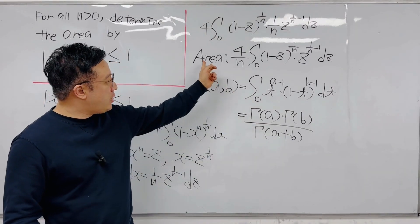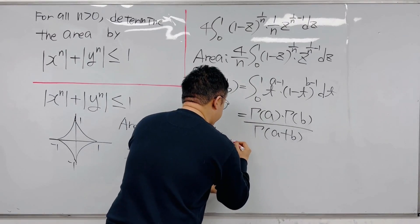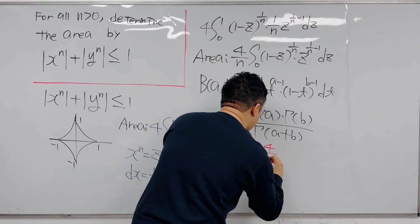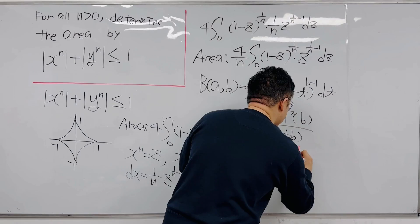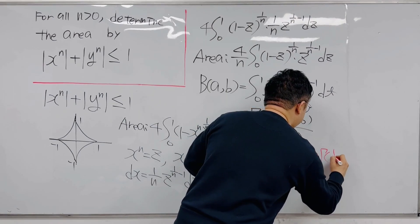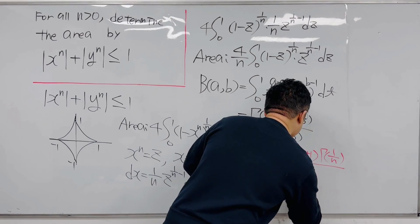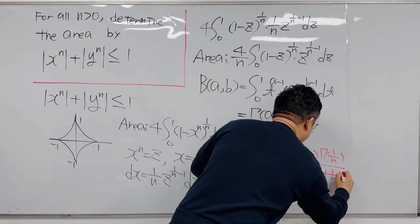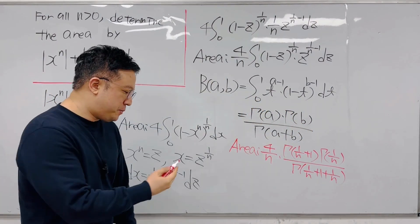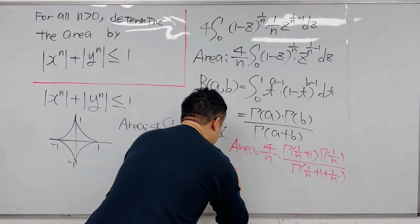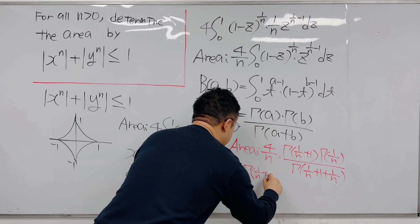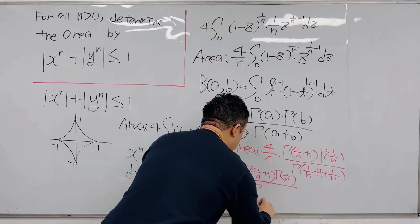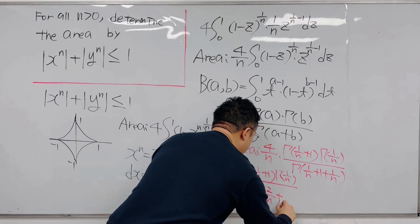Using this, we can represent the area using gamma functions. The area is 4/n times Γ(1/n + 1) × Γ(1/n), divided by Γ(1/n + 1 + 1/n), which simplifies to Γ(2/n + 1). So the area equals 4/n × Γ(1/n + 1) × Γ(1/n) / Γ(2/n + 1).